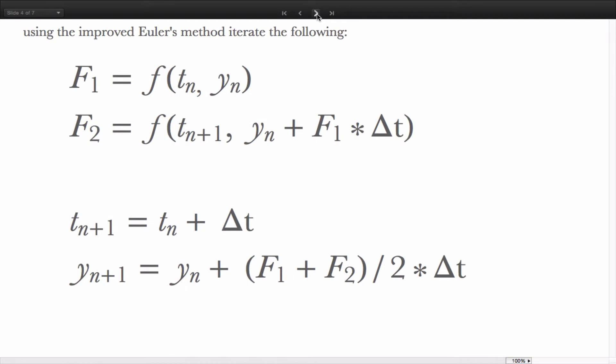Now, in the improved Euler's method, we introduce two new expressions, uppercase F1, uppercase F2. Well, F1 is simply the slope of the solution curve at the beginning of the interval. So, we evaluate the direction field at the beginning of the interval.